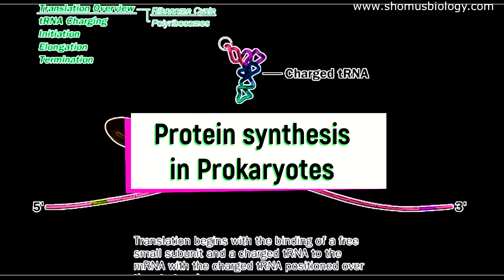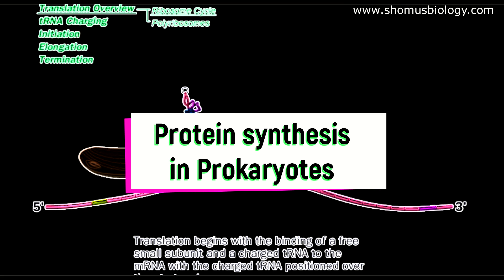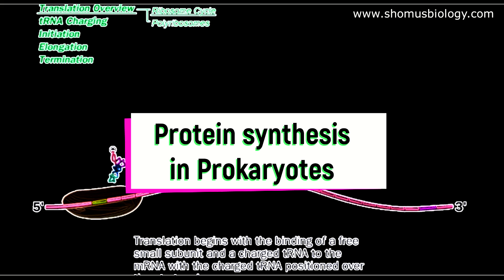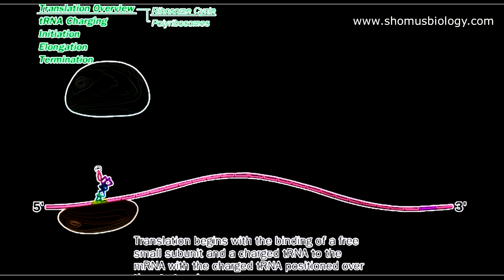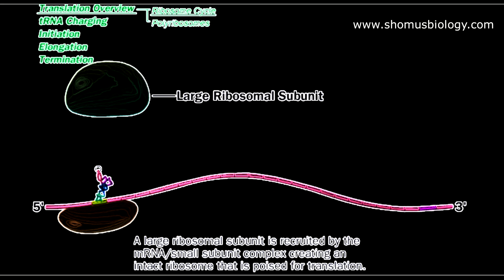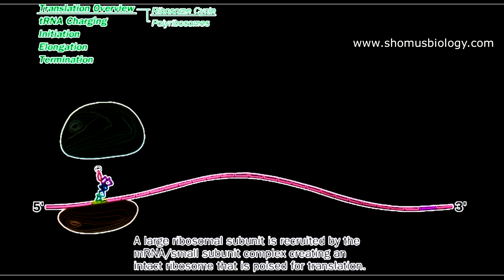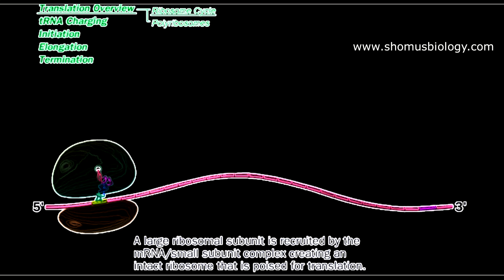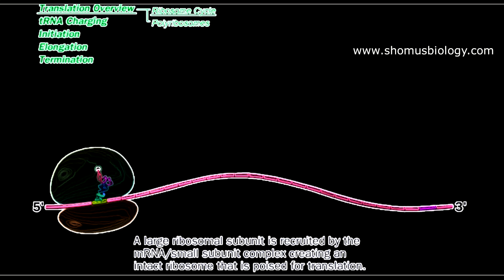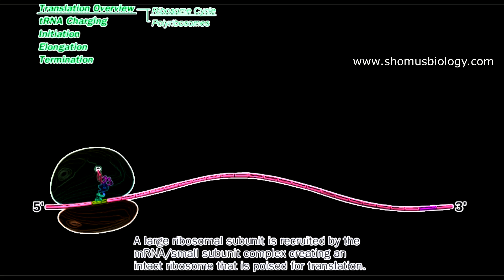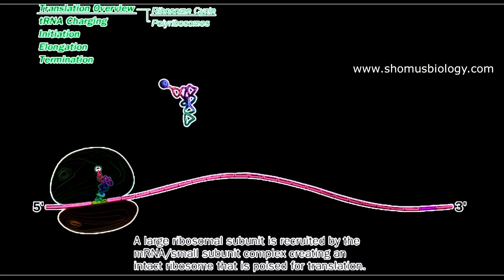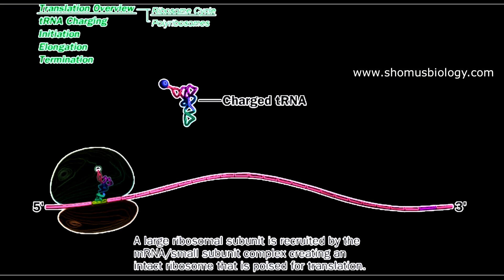The translation process begins when the small ribosomal subunit interacts with the start codon region of the mRNA. The first FMET tRNA already brings the amino acid, then the large ribosomal subunit falls into place and they initiate what is known as the formation of the 70S complex. Then they initiate the attachment of charged tRNA.